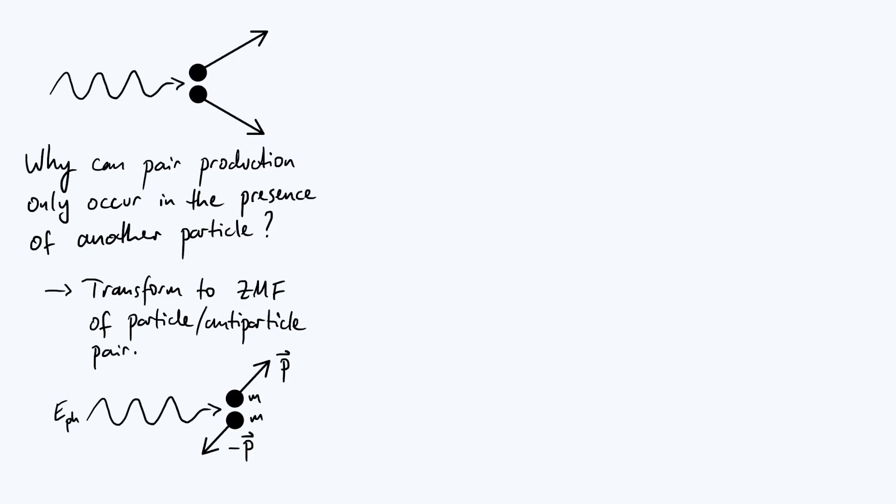So anyway, in this zero momentum frame, the particle and its antiparticle must of course have equal and opposite momenta. We're not considering the momentum of the photon when we try to transform to our zero momentum frame, we're specifically just requiring the particle-antiparticle pair to have a momentum that sums up to zero. So you've got p in one direction, which is just arbitrary, and minus p in the opposite direction.